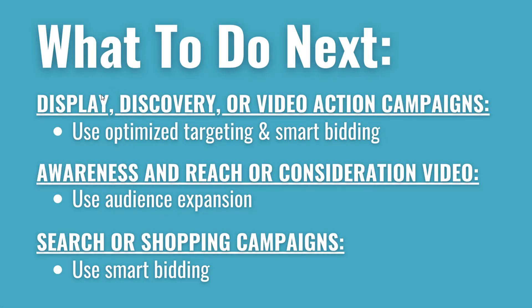Here's what you need to keep in mind: if you're running Display, Discovery, or Video Action campaigns, use optimized targeting and smart bidding. If you're running Awareness and Reach or Consideration video campaigns, use audience expansion. If you're running Search or Shopping campaigns, make sure you're using smart bidding. These are the moves you need to make to essentially see no changes in your account performance.